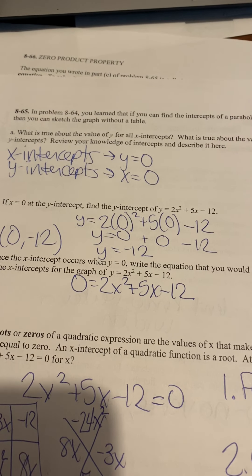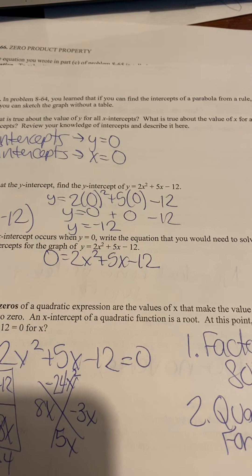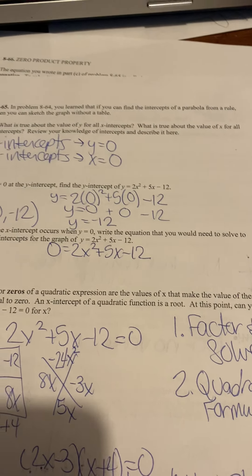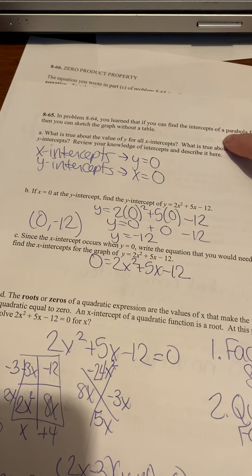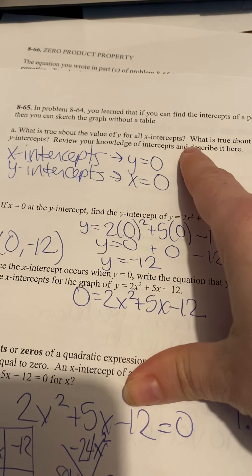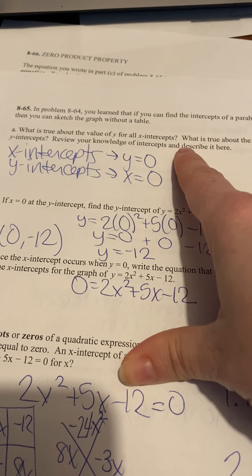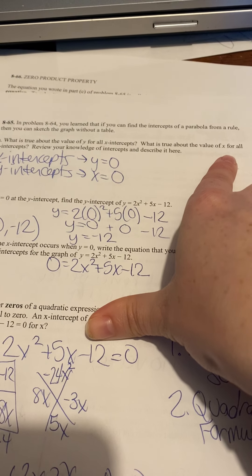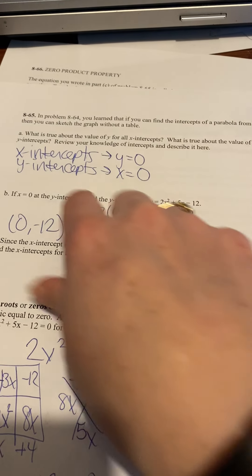Okay, in problem 64, you learn that you can find the intercepts of a parabola from a rule and that you can sketch the graph without a table. So, what is true about the value of y for all x-intercepts? What is true about the value of x for all y-intercepts?